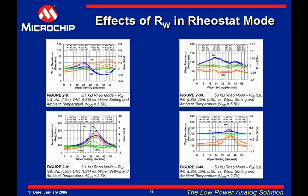In potentiometer mode, the variation of the RW resistance is not as important since the device is acting as a voltage divider, so the error is determined by the RS errors. In the 2.1K ohm device, the step resistance is very small — approximately 33 ohms — so the variation of the wiper resistance can be much larger than the step resistance values. That is why the INL error can be several LSBs.